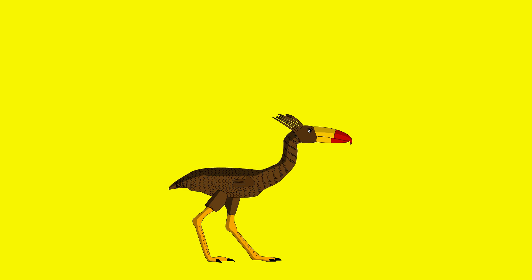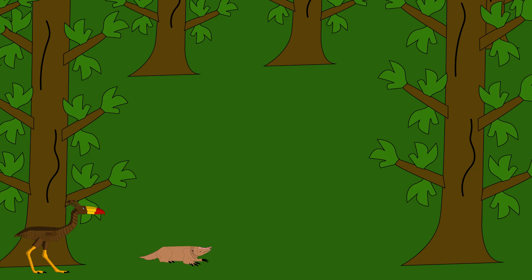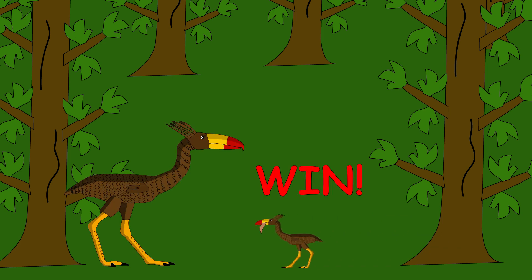Weeks pass. Your downy fluff is replaced by coarse, dirty feathers. You finally grow into your feet. Fast, but not fast enough. You chase a rat-like mammal into a bush and come back with a tail in your beak. It's messy, but it's a win.